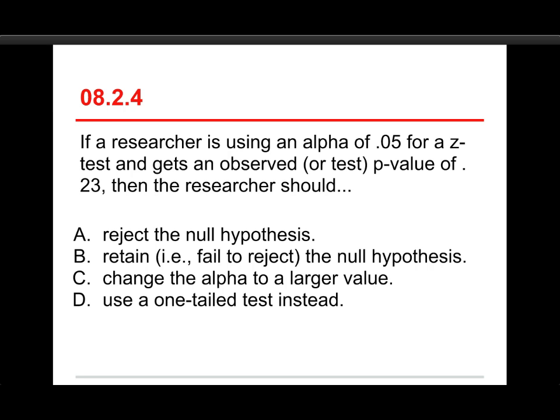Okay, next, if a researcher is using an alpha of 05 for a z-test, which is normal, and gets an observed or test p-value of 0.23, then the researcher should a, reject the null hypothesis, b, retain or fail to reject the null hypothesis, c, change the alpha to a larger value, or d, use a one-tailed test instead. So you set up your criterion and say that we're going to set off 5% of the z-score, of the z-distribution, and you get a test value, a p-value of 0.23, then what you should do is retain or fail to reject the null hypothesis.